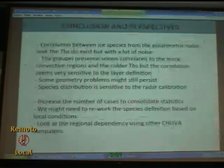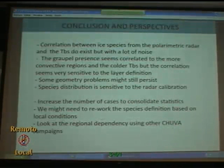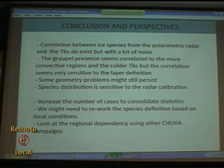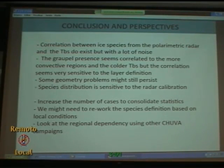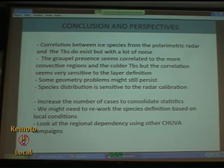In conclusion, we have seen that the correlation between ice species from the polarimetric radar and the TBs does exist, but with a lot of noise. The global presence seems correlated to the more convective regions and the colder TB values, but the correlation seems very sensitive to the layer definition. Some geometric problems may still persist and the species distribution is sensitive to radar calibration. We need to increase the number of cases to consolidate statistics, rework the species definition based on local conditions, and look at the regional dependencies within the field campaigns.